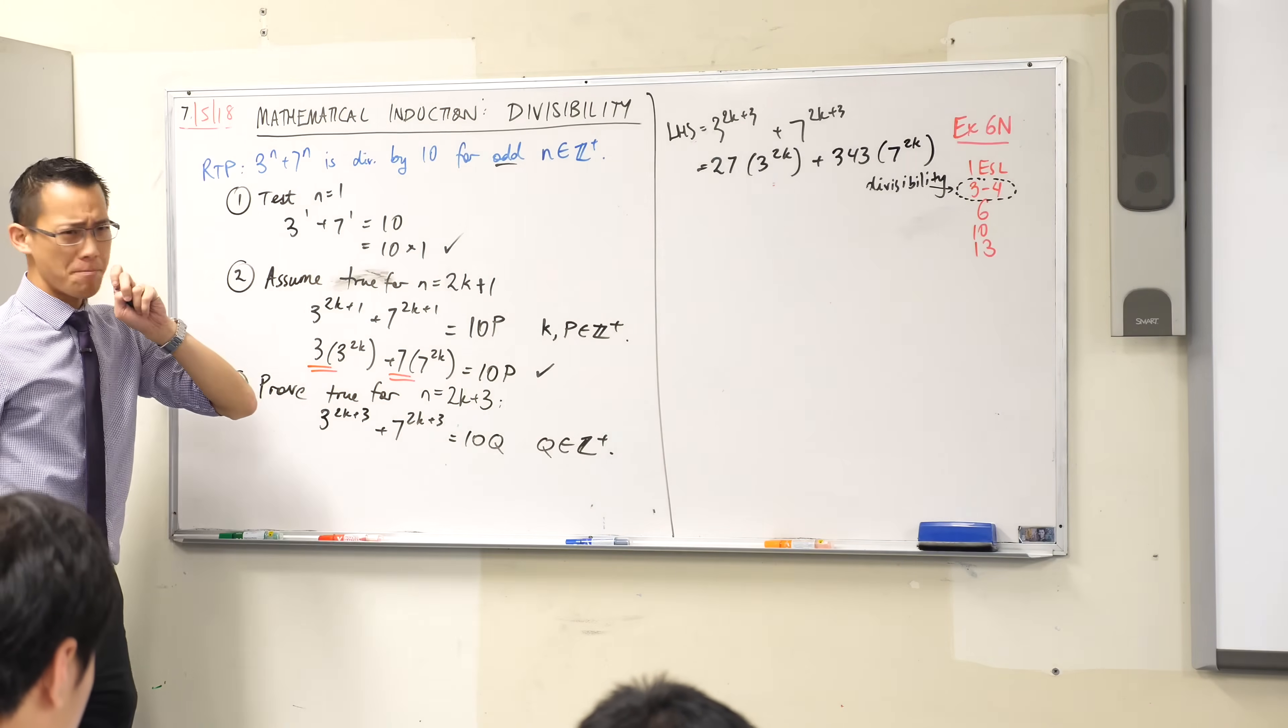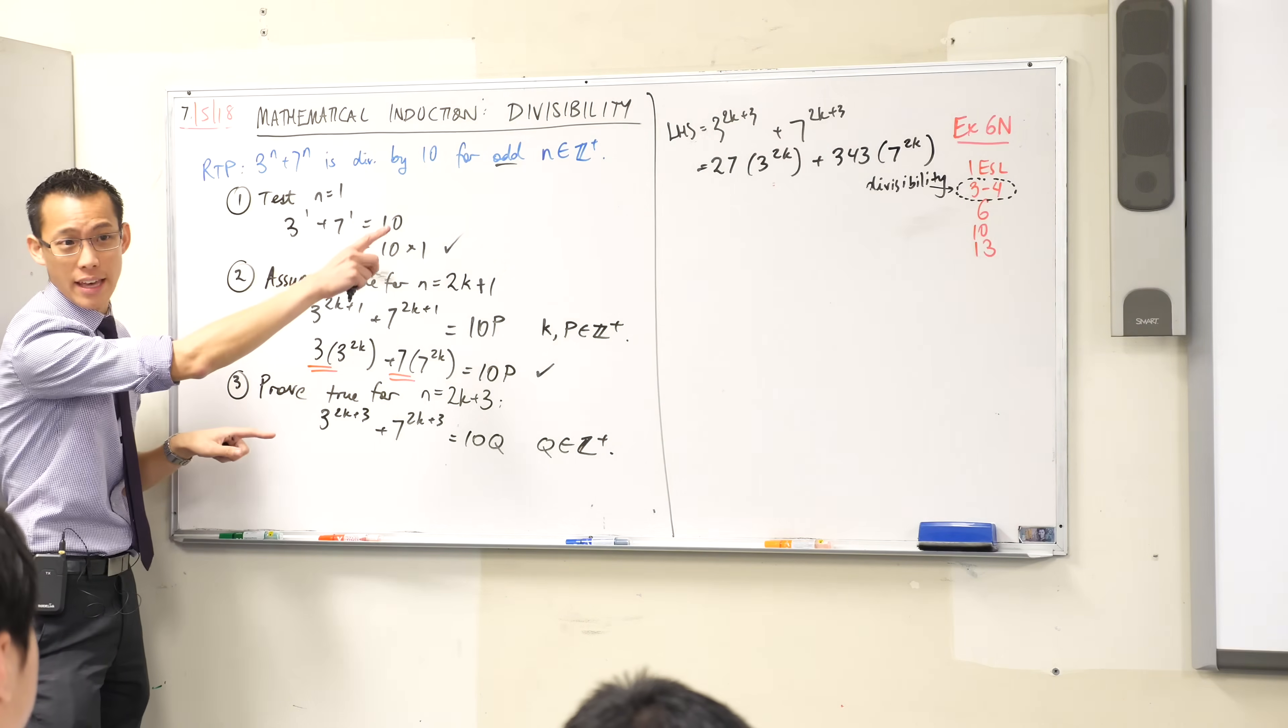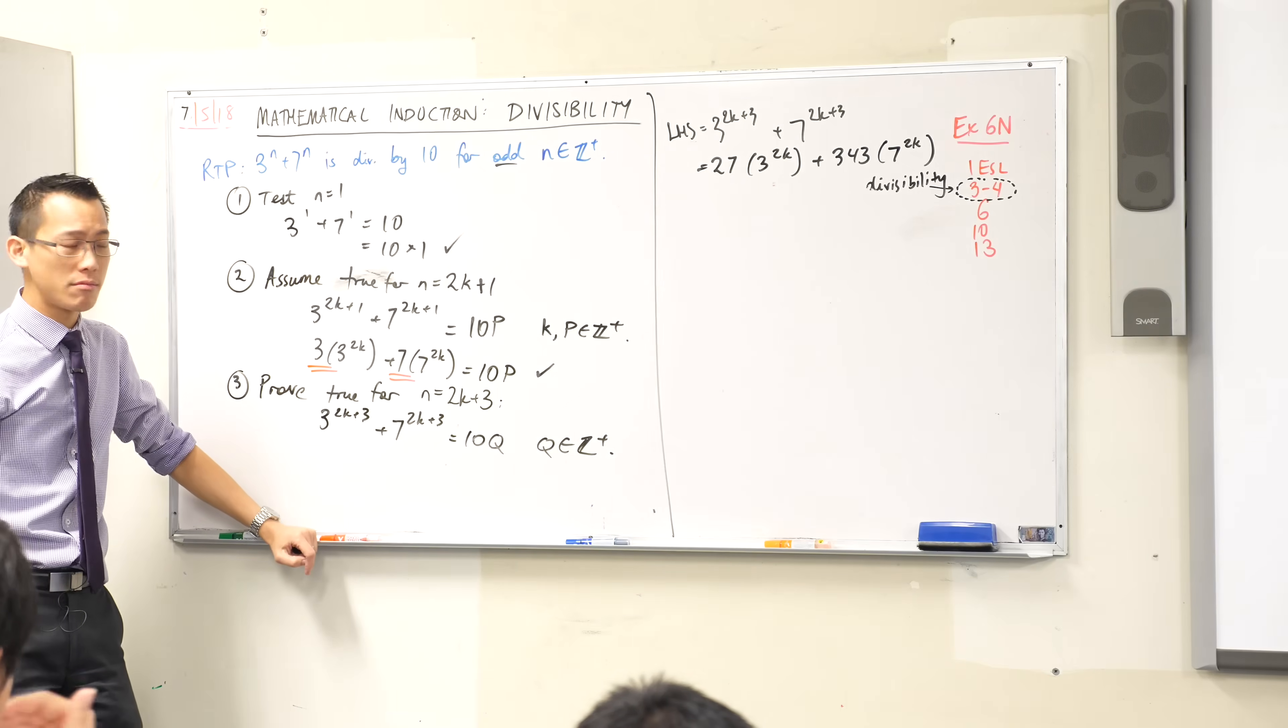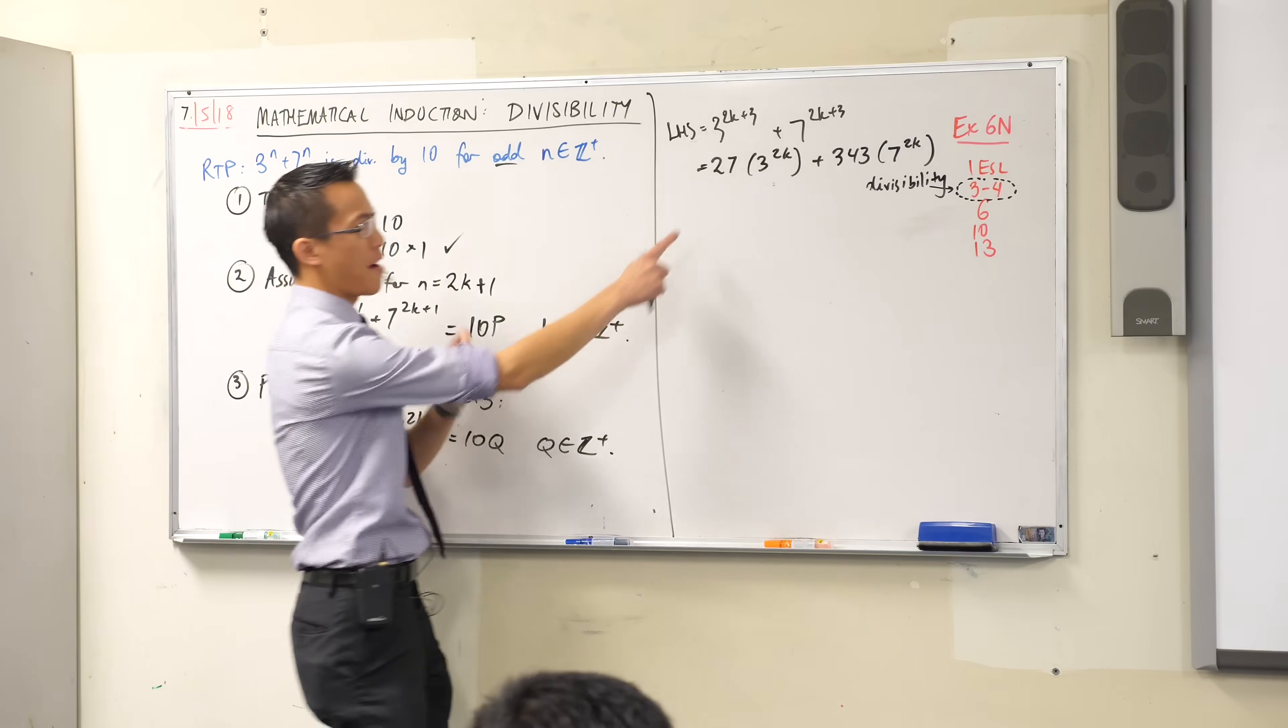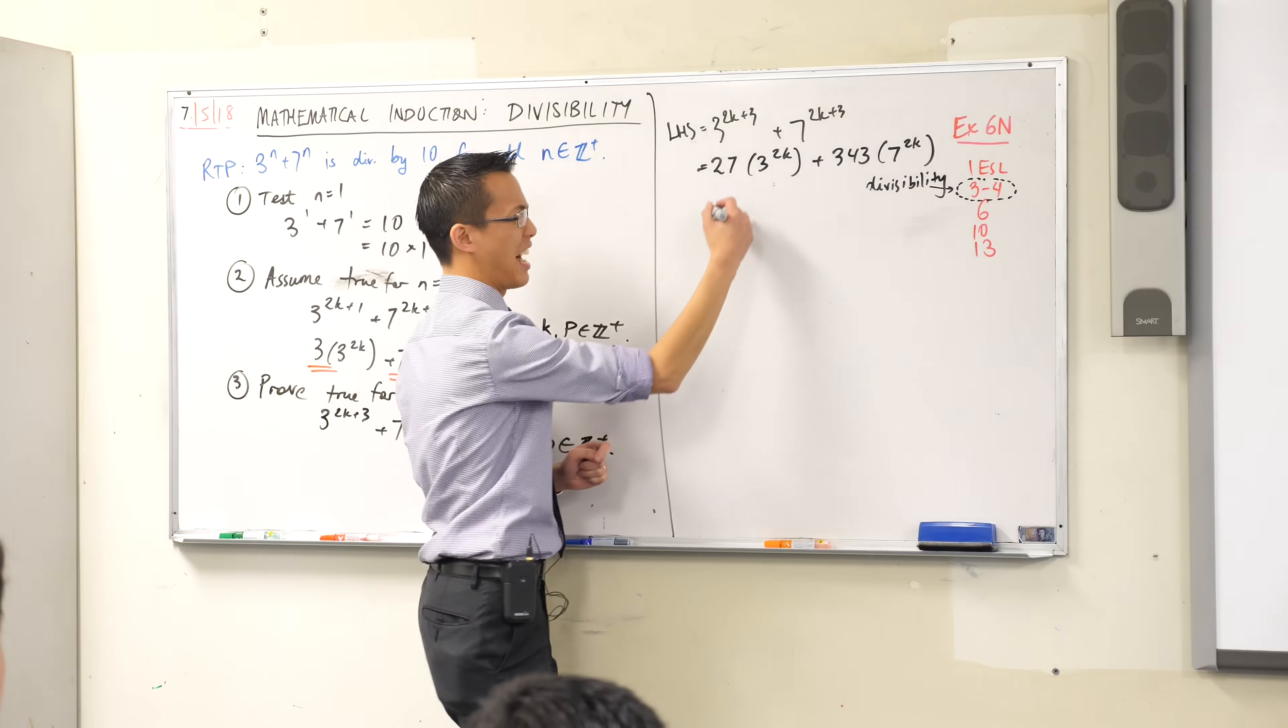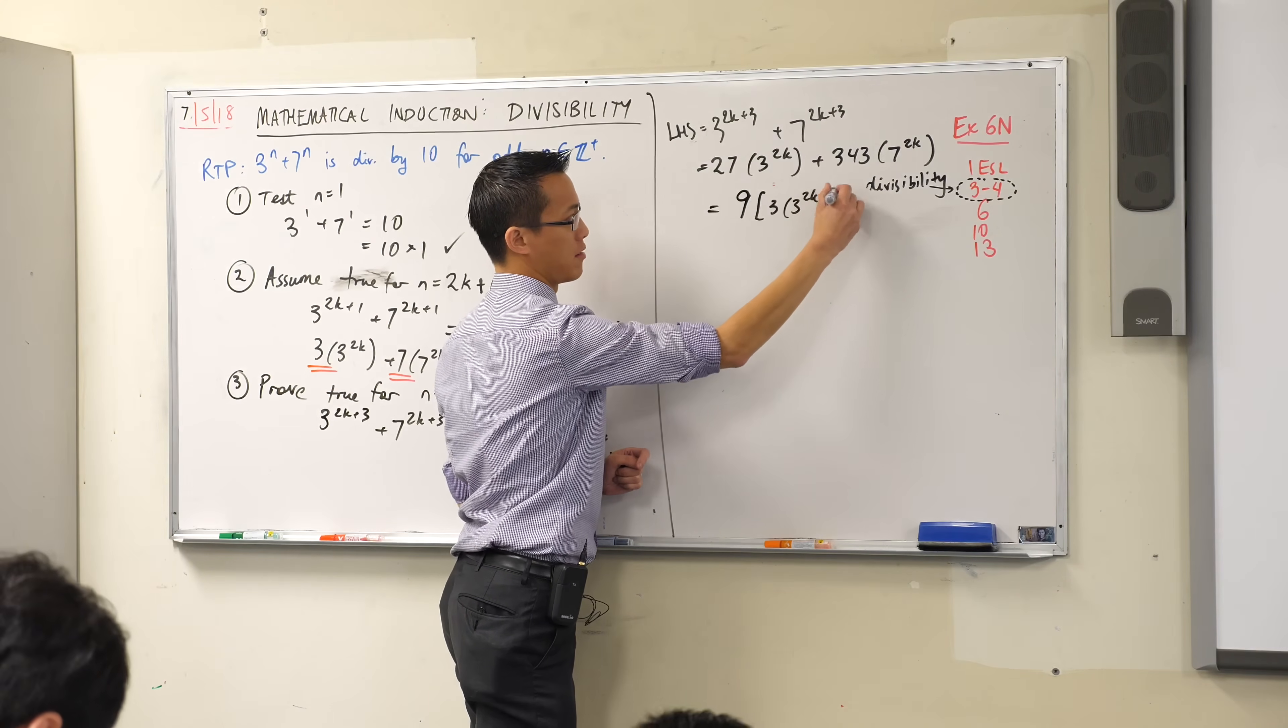Now, what am I trying to get in there? What am I trying to find? And the answer is I'm trying to find these guys, right? They're clearly in there. How many do I have of each? Well, 3 lots of 3 to the 2k. How many of the 3 times the 3 to the 2k's do I have? I think I can see 9 of them. Do you agree with that?